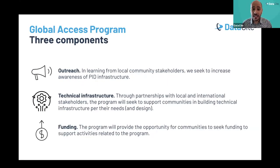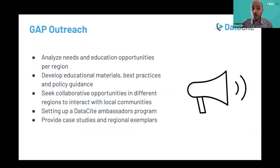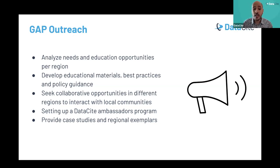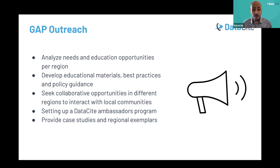DataCite took a comprehensive approach to achieve the goals of our Global Access Program, with three main components: outreach, technical infrastructure, and funding. Within our outreach element, we are analyzing the needs and education opportunities per region, developing educational materials, best practices, and policy guidance. We are seeking collaboration opportunities such as this fantastic collaboration with TÜBİTAK and Izmir Institute of Technology. We are also setting up a DataCite ambassador program to build a network of volunteers who can spread our message and vision to achieve open research through a trusted open research infrastructure.